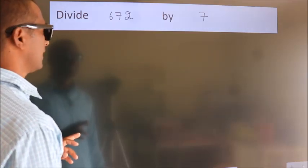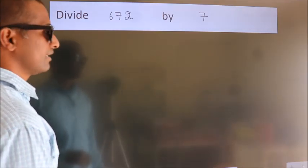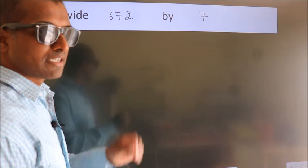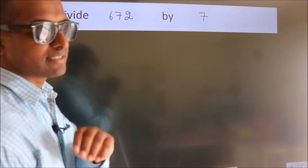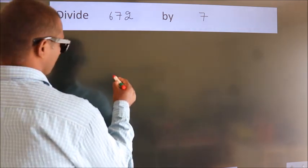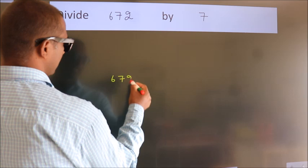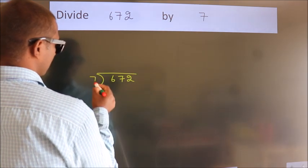Divide 672 by 7. To do this division, we should frame it in this way. 672 here, 7 here.